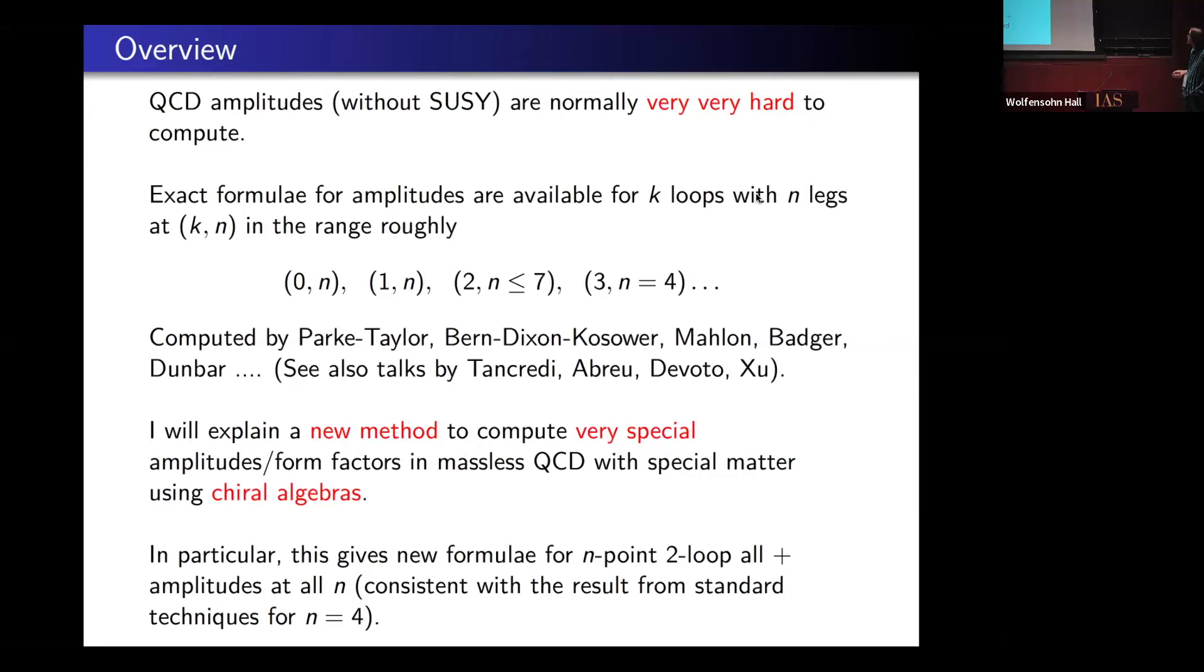What I want to talk about today is a new method which computes very special amplitudes in massless QCD using chiral algebras. You can go a bit further than what's been known before in the special cases to which it applies. In particular, we can get formulas for endpoint two-loop all-plus amplitudes in massless QCD with certain special matter content.